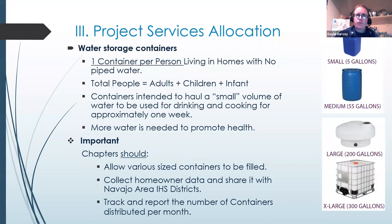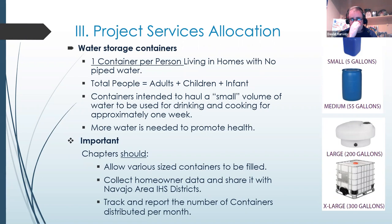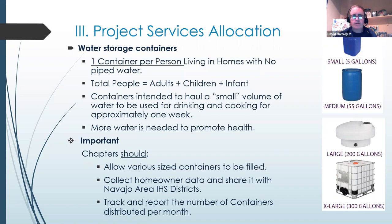For the containers: one five-gallon water container for each person living in the home — adults plus children plus infants. These containers are intended to haul a small volume of water for drinking and cooking for approximately one week. More water is needed to promote health, so the transitional and permanent water points allow people to fill up larger containers as well — all types of containers should be allowed access at the chapters for filling water. Chapters should collect homeowner data and share it with IHS districts, and track the number of containers distributed to gauge the level of impact of this project.